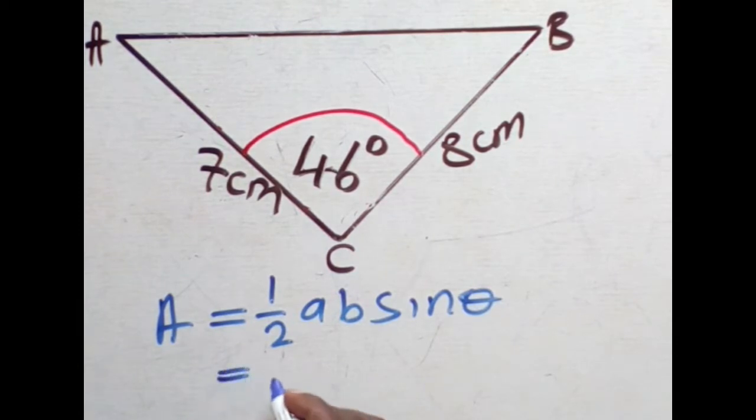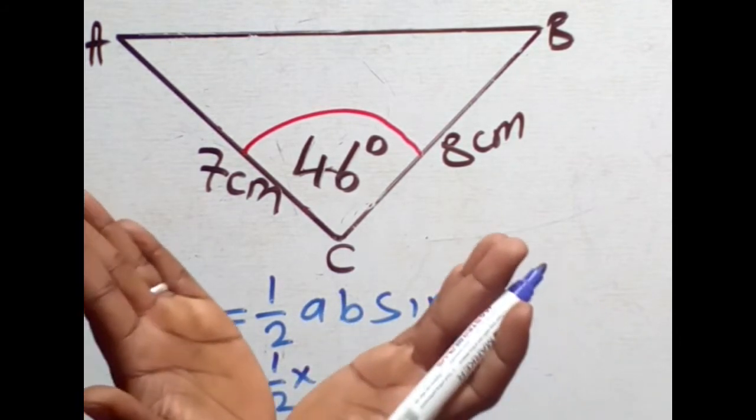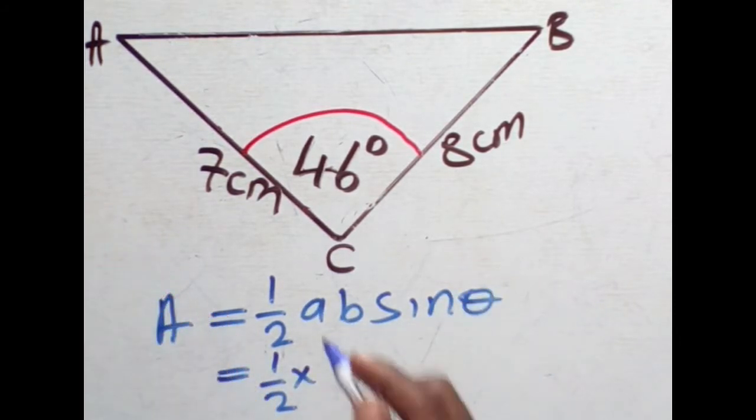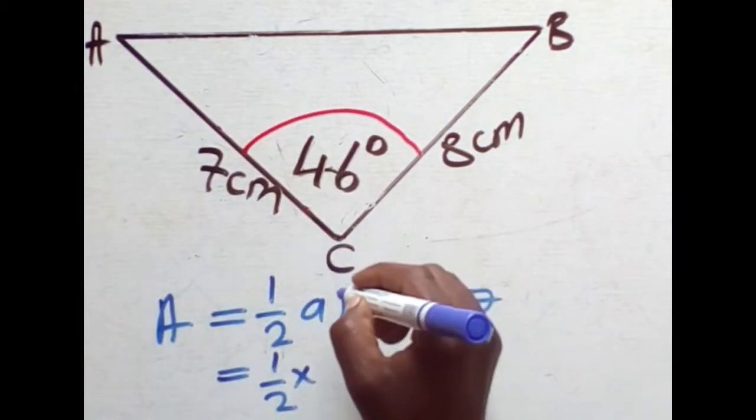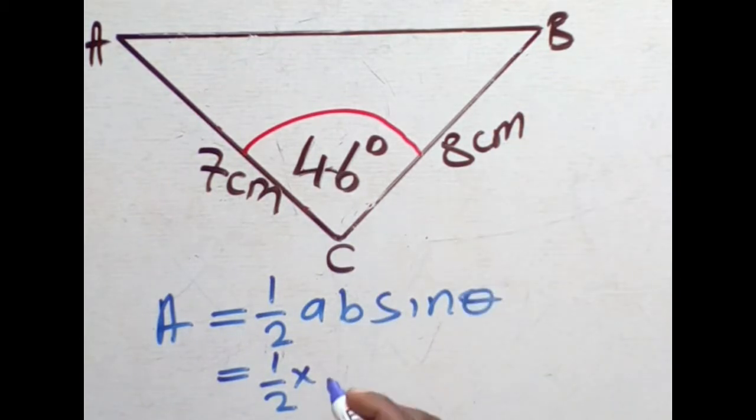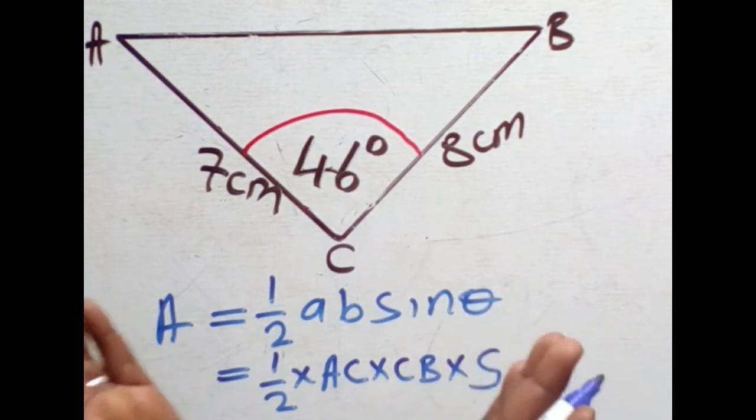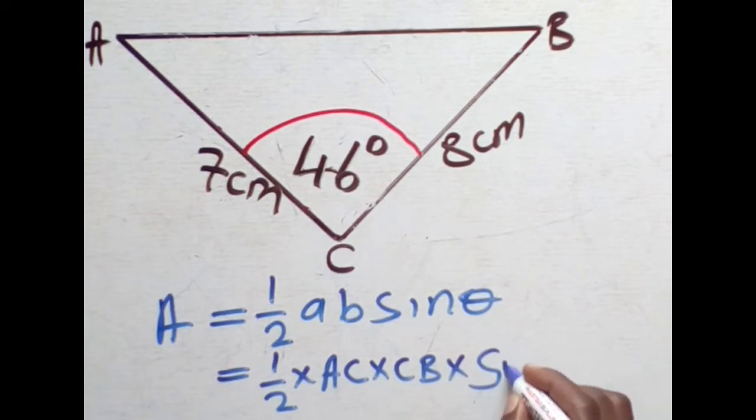This will now be substituted as one over two, then times A and B must be two sides adjacent to the angle. So the two sides that are touching the angle are these two sides. That is AC and CB. So it will be times AC times CB, then times sine.